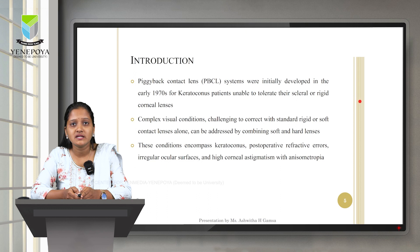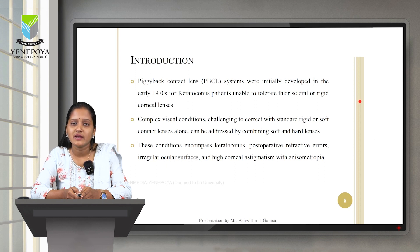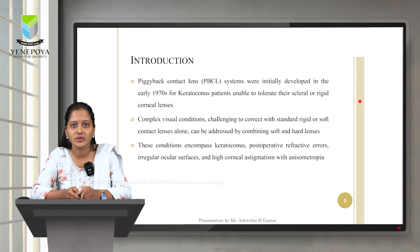When we correct complex visual conditions like keratoconus, it cannot be corrected with a sole lens like RGP mainly because of patient intolerance. This condition encompasses keratoconus, postoperative refractive errors, irregular ocular surfaces, and high corneal astigmatism with anisometropia.